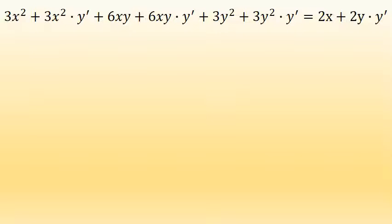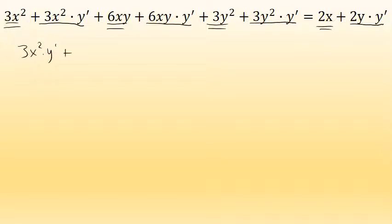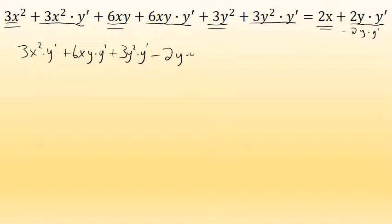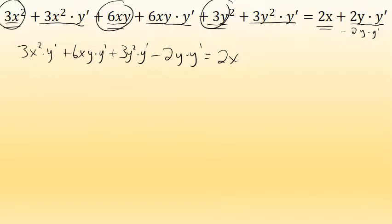The next step is to move the y prime terms to one side of the equation and the non-y prime terms to the other side. I'll keep y prime terms on the left and move the rest to the right. There was already a 2y·y prime on the right, so I subtract 2y·y prime from both sides. The non-y prime terms on the left — 3x squared, 6xy, and 3y squared — get subtracted, so the right side becomes 2x minus 3x squared minus 6xy minus 3y squared.